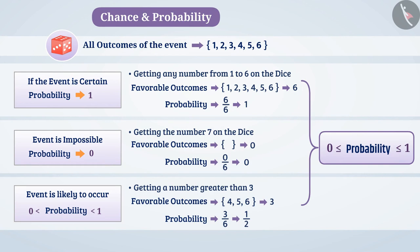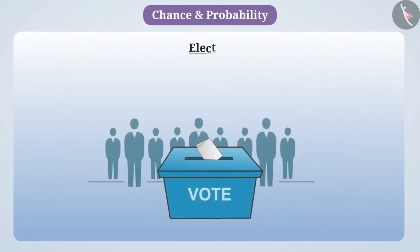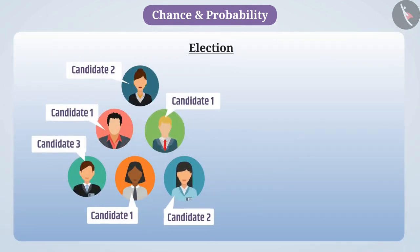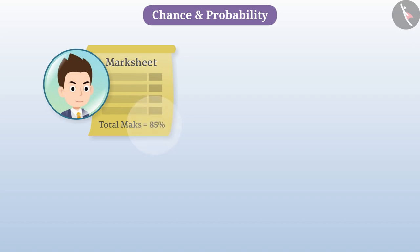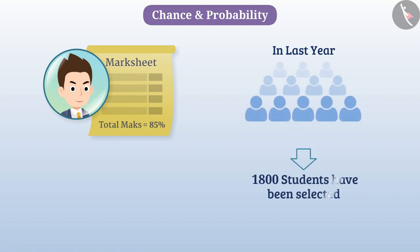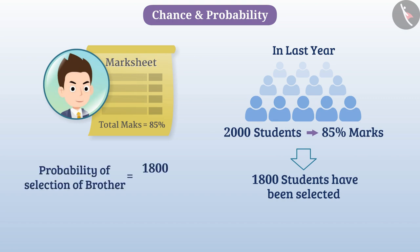Now let's look at some situations related to the use of chance and probability in real life. During elections, people are asked about their choice and the number of answers received is used to find the probability of winning of each candidate, and exit polls are obtained based on it. Suppose your elder brother has got 85% marks in a government examination. If last time 1800 students were selected out of 2000 candidates who secured 85% marks, then we can say that the probability of selection of your brother is 1800 divided by 2000, that is 9 out of 10. Now you can find out more such situations by yourself.